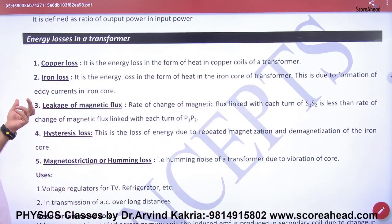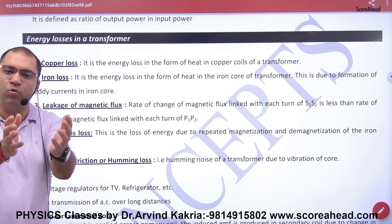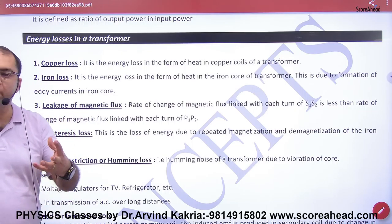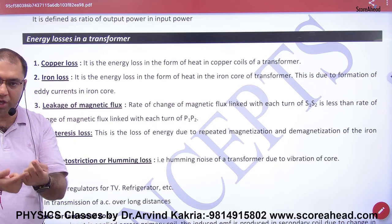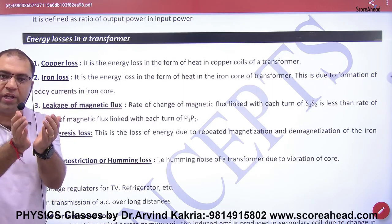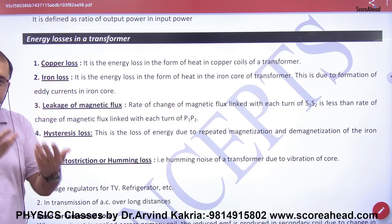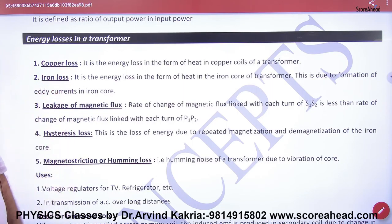The second loss is iron loss. The transformer is made of iron, and it develops eddy currents. When the current changes in the wire, these eddy currents generate heat, and so it is known as iron loss.